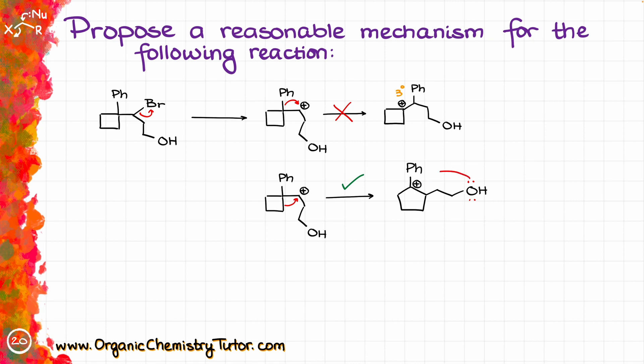I'm going to have my oxygen attacking my carbocation like so, giving me the following intermediate. The last thing we need to do to get our final product is to get rid of this proton, and that's where we can use ethanol as essentially a base floating around and pulling things off our molecule. I'm going to take this ethanol molecule and use it as a base to pull my proton off and get my final product.